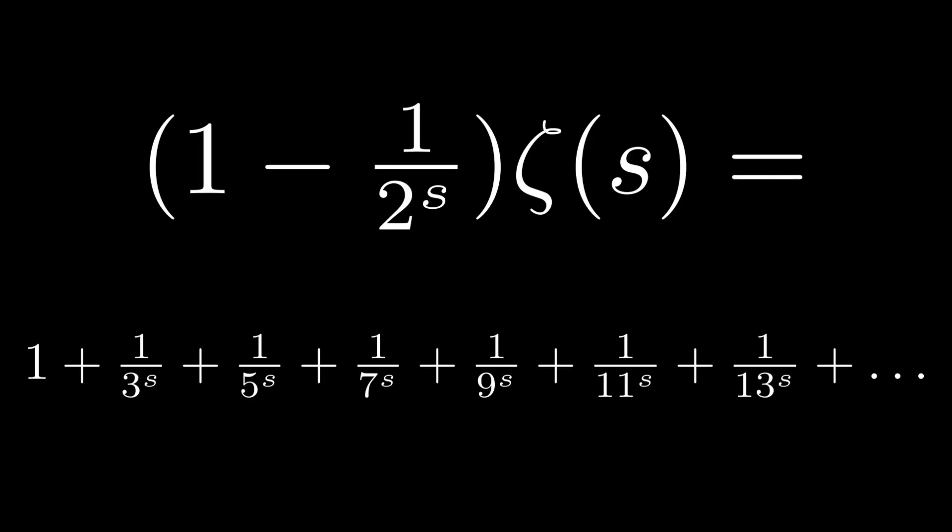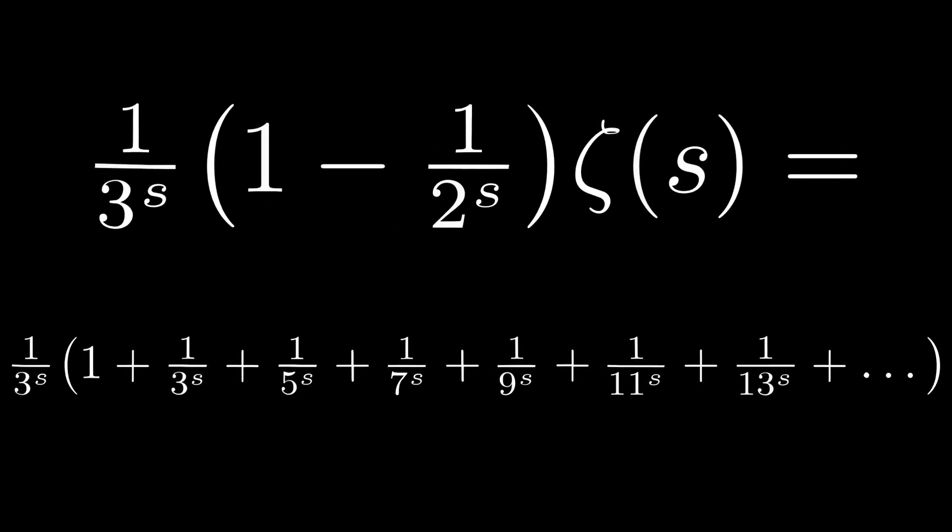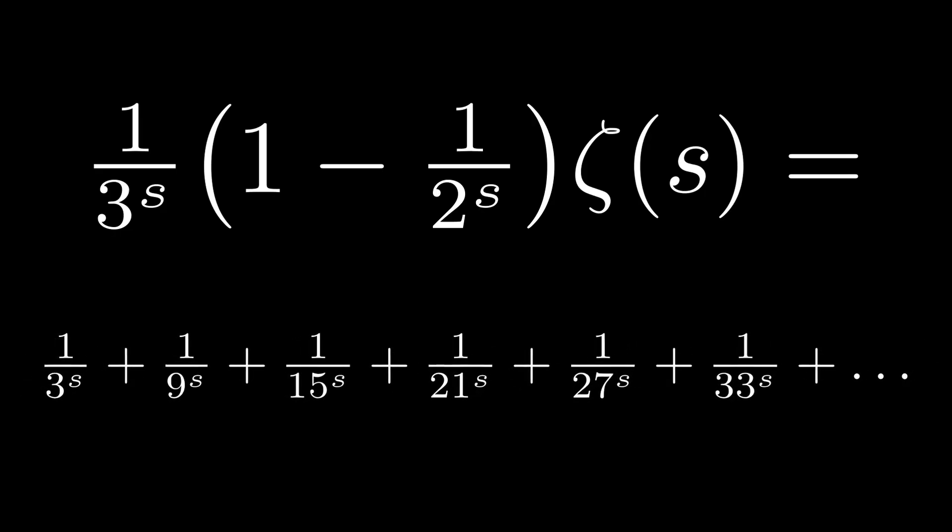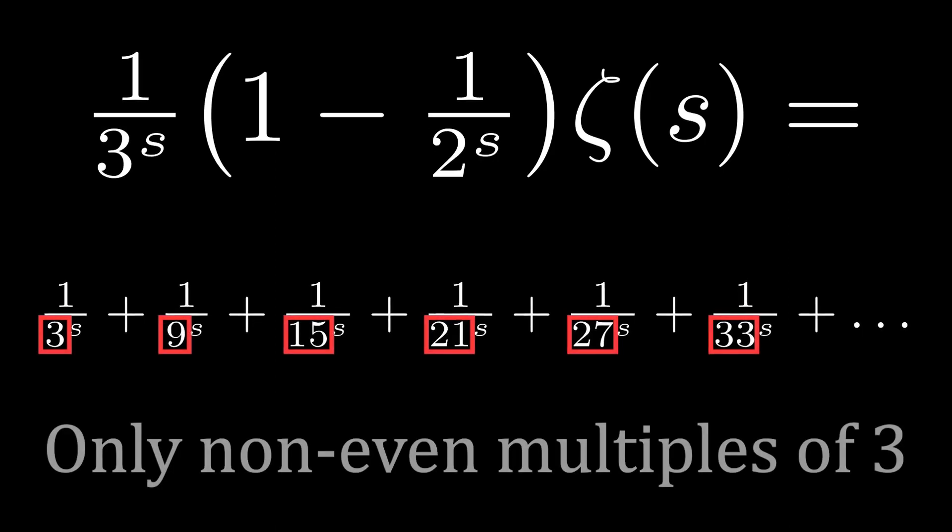Now, let's multiply this sum by 1 over 3 to the s. What we end up with is an infinite sum containing terms only of the form of non-even multiples of 3 to the power of minus s.